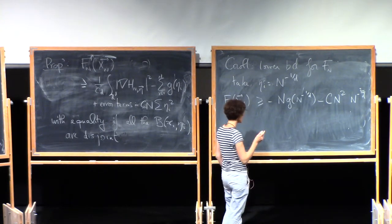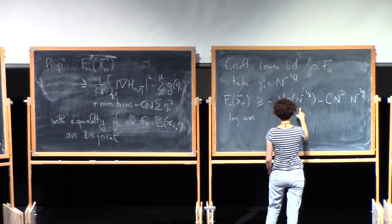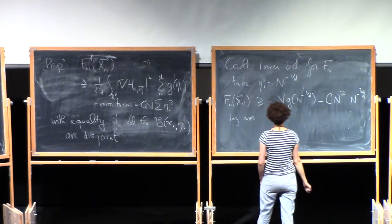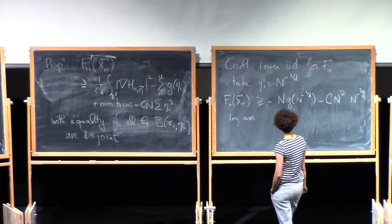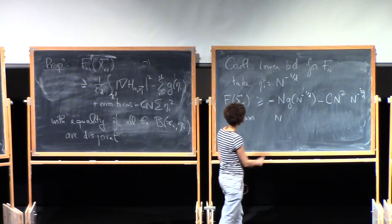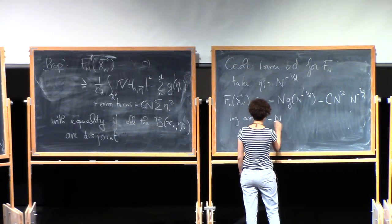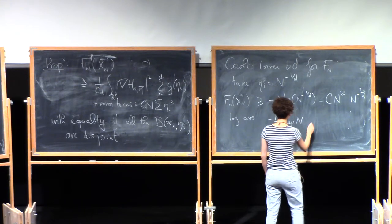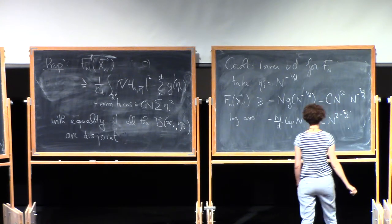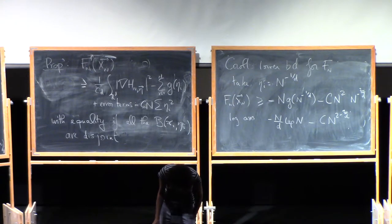Take eta. So you take eta equals for every i. You want to find the right value of eta i that you should plug in there. The idea is you want eta i to be small so that these error terms are small. But you also don't want it to be too small because otherwise these terms will become very negative and you're looking for a lower bound. So if you optimize those two things, you find that the right eta i that you should take is n to the minus one over d. And that should not come really as a surprise because this is the natural length scale which we expect to be the distance between two points.